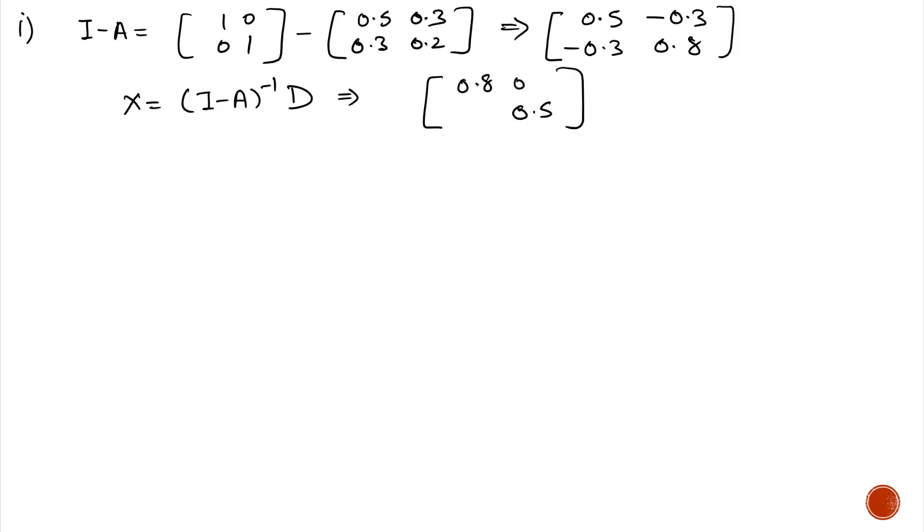Gross output is (I minus A) inverse multiplied by D. First, we calculate (I minus A) inverse, and D is [15; 20]. After solving, we will get the gross output, which is denoted by X1 and X2, equals 58.06 and 46.77.